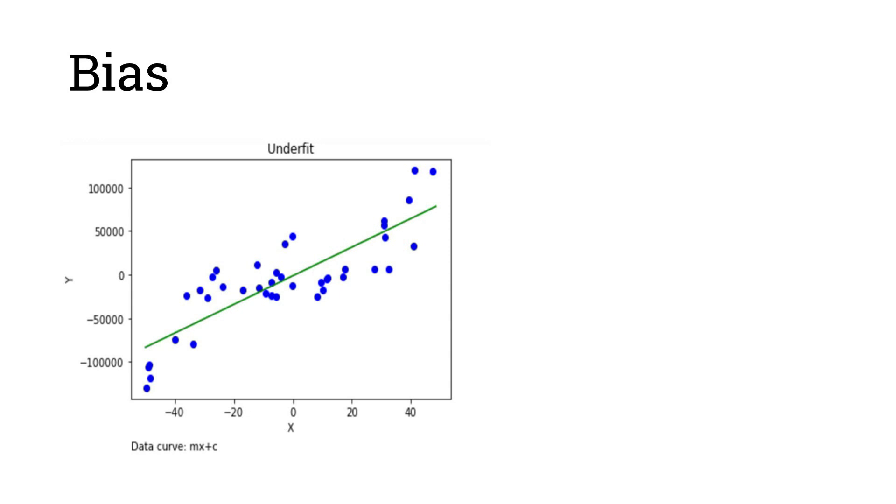So what is bias? Bias is basically an error in the model. That is the error that exists between the predicted value of the model and the targeted value. So this basically happens because we don't take into consideration all the parameters or all the features which are there in the dataset. Hence, we develop a model which is highly simplified. So this results in the error.